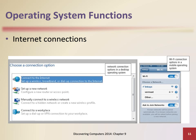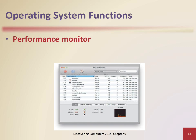Operating systems typically provide a means to establish internet connections. A performance monitor is a program that assesses and reports information about various computer resources and devices. For example, the user can monitor the processor, disks, network, and memory usage.